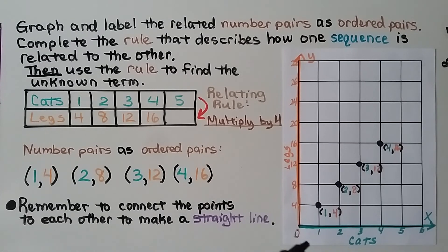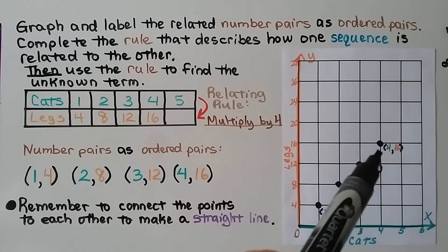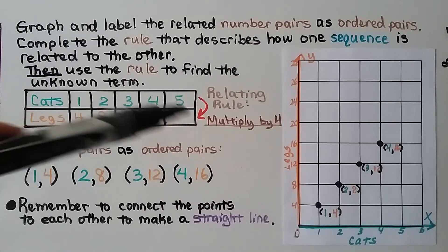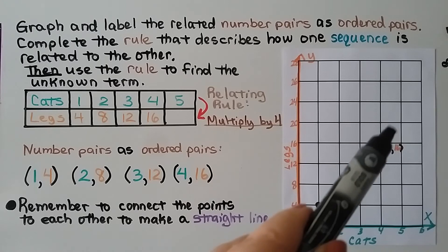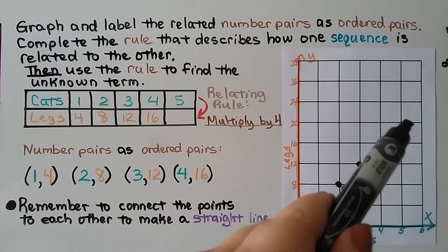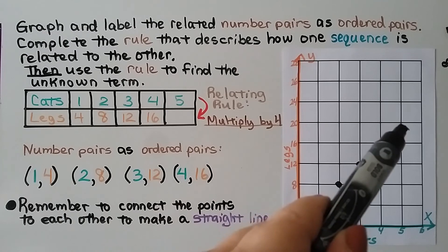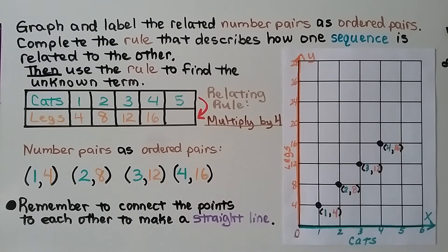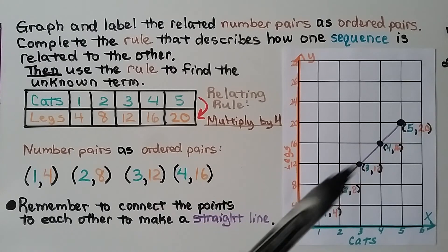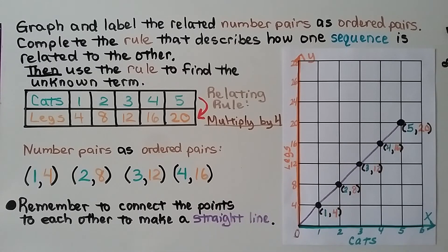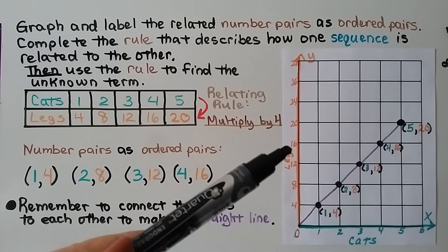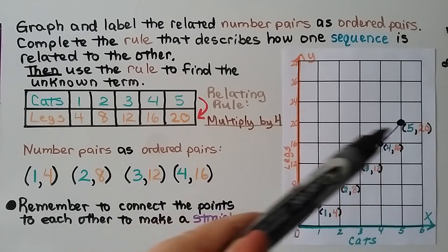We plot the points 1 for x and 4 for y, 2 for x and 8 for y, 3 for x and 12 for y, 4 for x and 16 for y. And if we multiply by 4, we can see the line that it's making. This would be the very next point. That would be a 5 for x and a 20 for y to make a straight line. We connect the points to each other to make a straight line. You can make a straighter line than I did if you use a straight edge. So here's the number of cats and here's the number of legs. We can see when there's 5 cats, we'll count 20 legs.